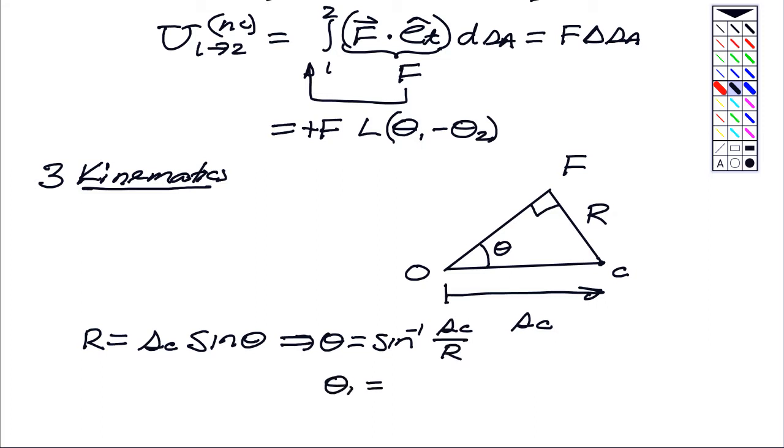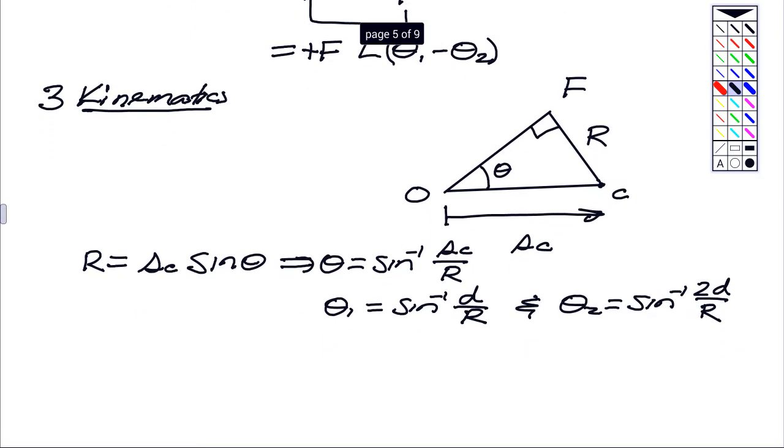So what we have then is that for any position, theta is given by the inverse sine of SC divided by R. So therefore, theta 1, our initial one, is the inverse sine of distance SC, which was D over R. And for position 2, it's going to be the inverse sine of 2D over R, because C will have moved an additional distance of D. So that gives us the angles that we need.